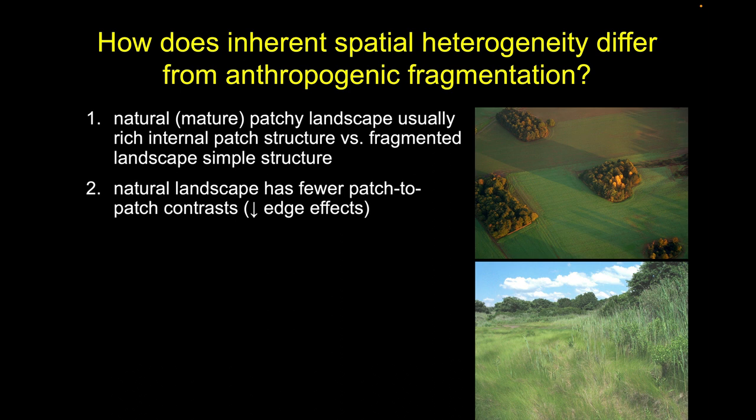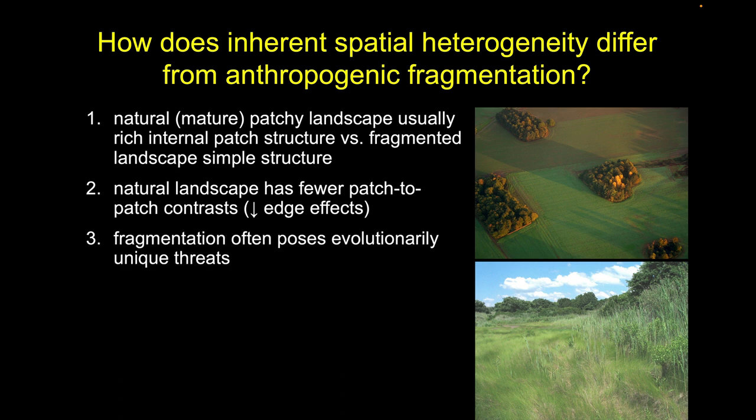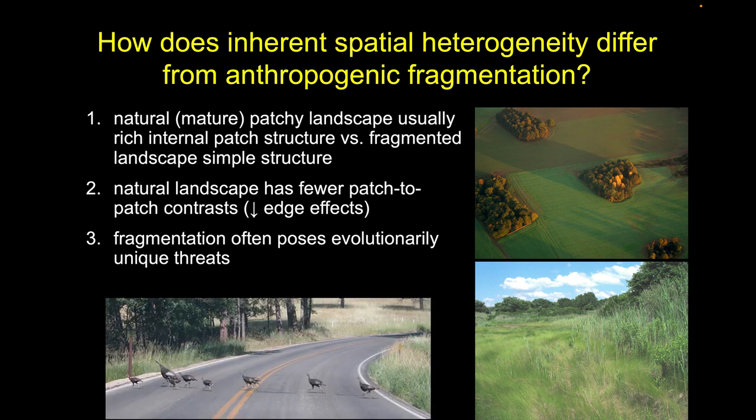As we fragment habitat, we also generate evolutionarily unique threats. A roadway is not the kind of thing that turkeys have evolved with. A Maserati going 100 miles an hour is not something these organisms have had to respond to in their evolutionary history — so it's a very difficult lift to expect these organisms to adapt quickly to these human-induced spatial changes.